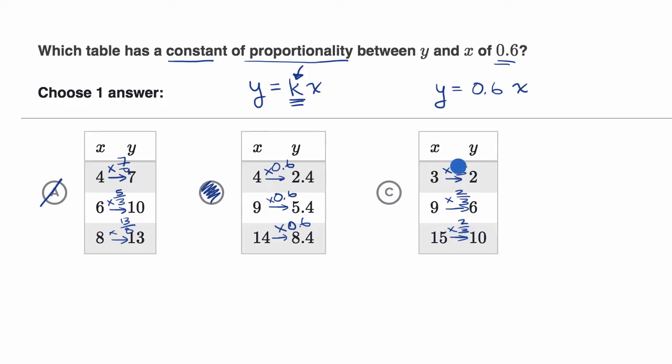But our constant of proportionality here is two thirds, which, if you tried to express it as a decimal, would be 0.6 repeating. Two thirds is equal to 0.6 repeating.